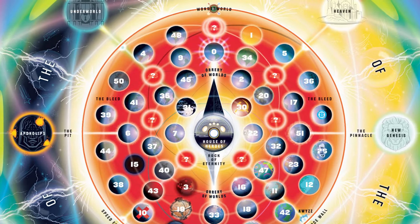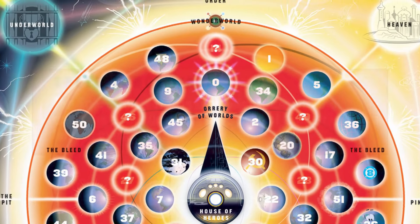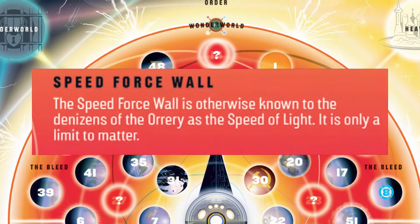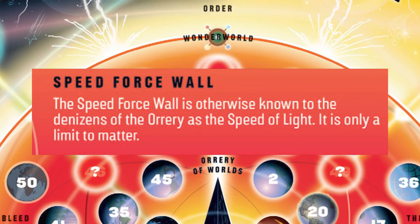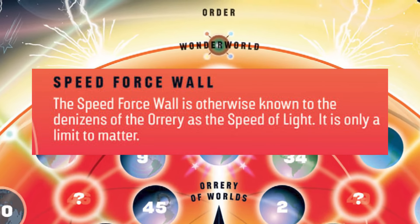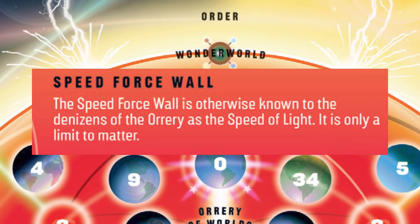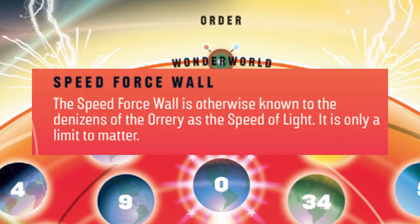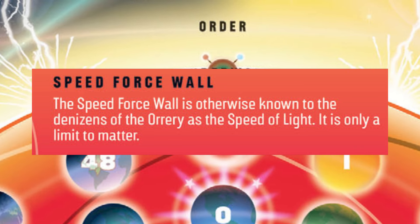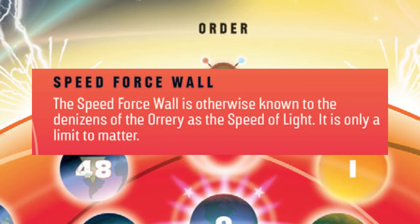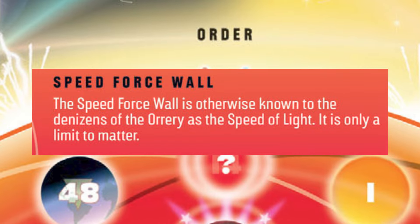Something interesting to note is that once you hit the Speed Force Wall — which is past the Bleed — you're basically hitting where the end of matter can go, like where the speed of light inside DC occurs. So clearly all spatial matter, which should include any spatial dimension, would exist below this point.